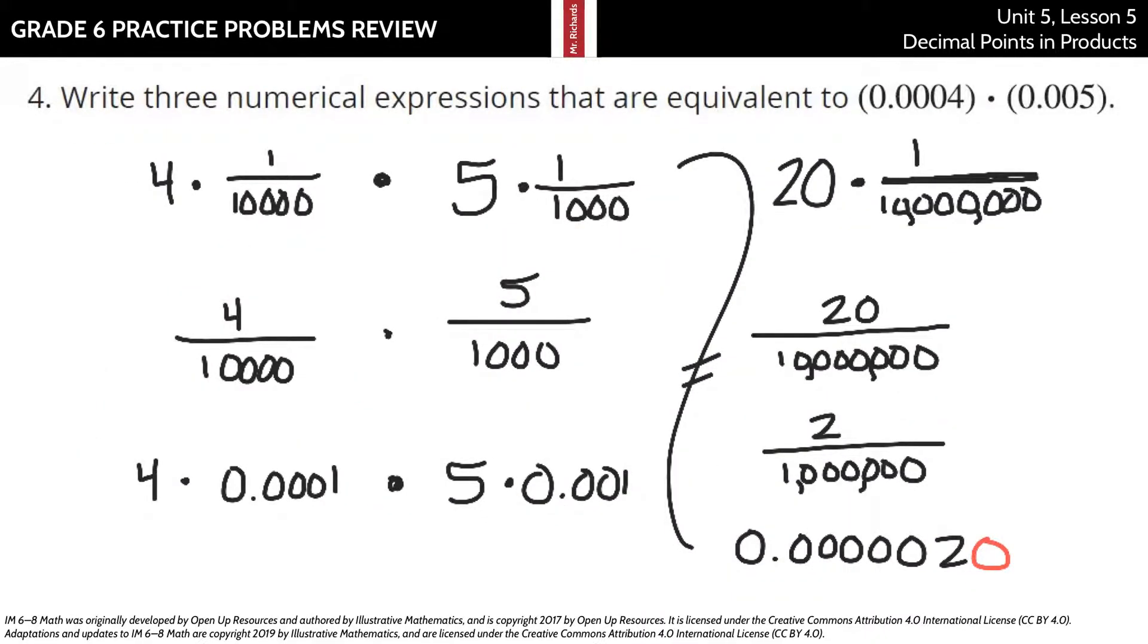Now, question four, I went a little overboard here, but write three numerical expressions that are equivalent to four, this is tenths, hundredths, thousandths, ten-thousandths, times five, one, which is tenths, hundredths, thousandths. So essentially, four times ten-thousandths, or more than ten-thousandths, excuse me, times five times one one-thousandth, which is four ten-thousandths times five one-thousandths. And another way to write this as decimals is four times a ten-thousandth times five times a-thousandth.